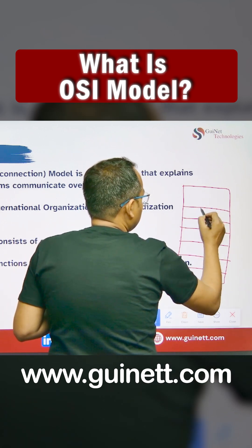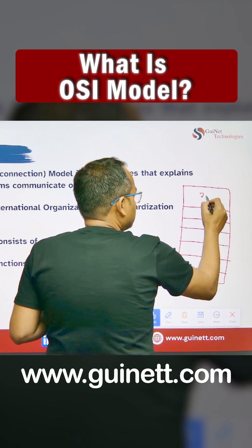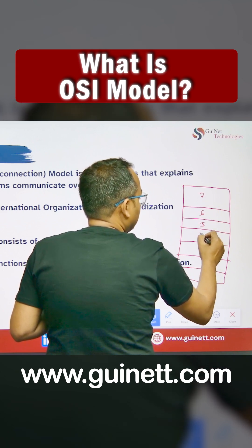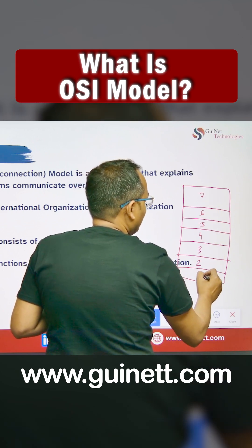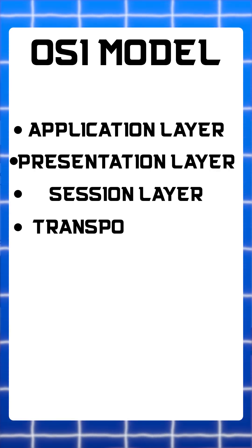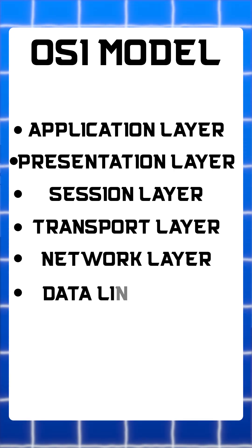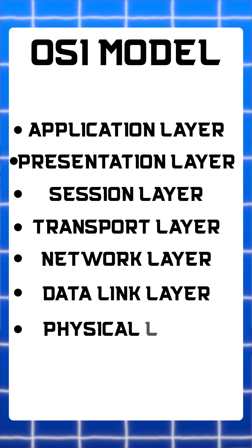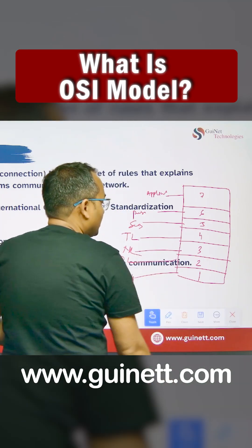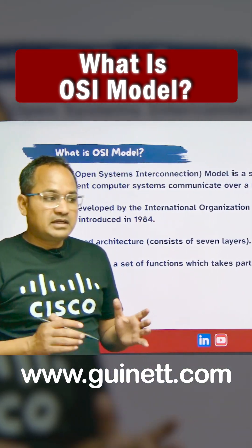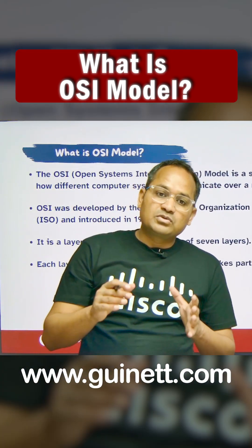This is known as a layered-based architecture. Starting from layer seven down to one: the Application layer, the Presentation layer, the Session layer, the Transport layer, the Network layer, the Data Link layer, and the Physical layer. All these layers are going to be used throughout all communication, and each layer has a set of functions.